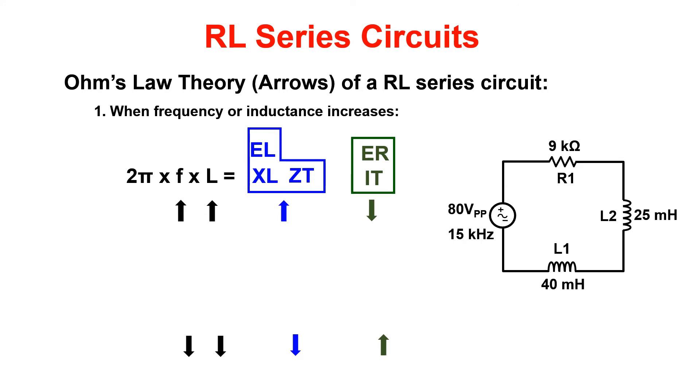This is the couch in our couch coffee table analogy. The coffee table includes the voltage drop of the resistor and the total current. These will do the exact opposite of the couch. They will decrease with an increase in frequency or inductance.